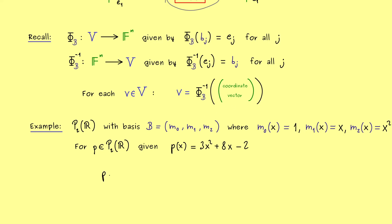So now the question for you is what is the coordinate vector in this case? Obviously you can write p as a linear combination of the basis vectors. So first we have -2 times m0 and then we have 8 times m1